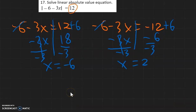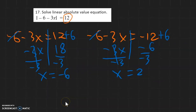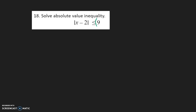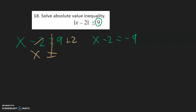So now we don't need to do a number line because this is an equation. For number 18, we know we have to write two equations because we have a positive 9. So x minus 2 is equal to positive 9, and x minus 2 is equal to negative 9. To solve, we bring the negative 2 to the other side as positive 2. Negative 9 plus 2 is negative 7.